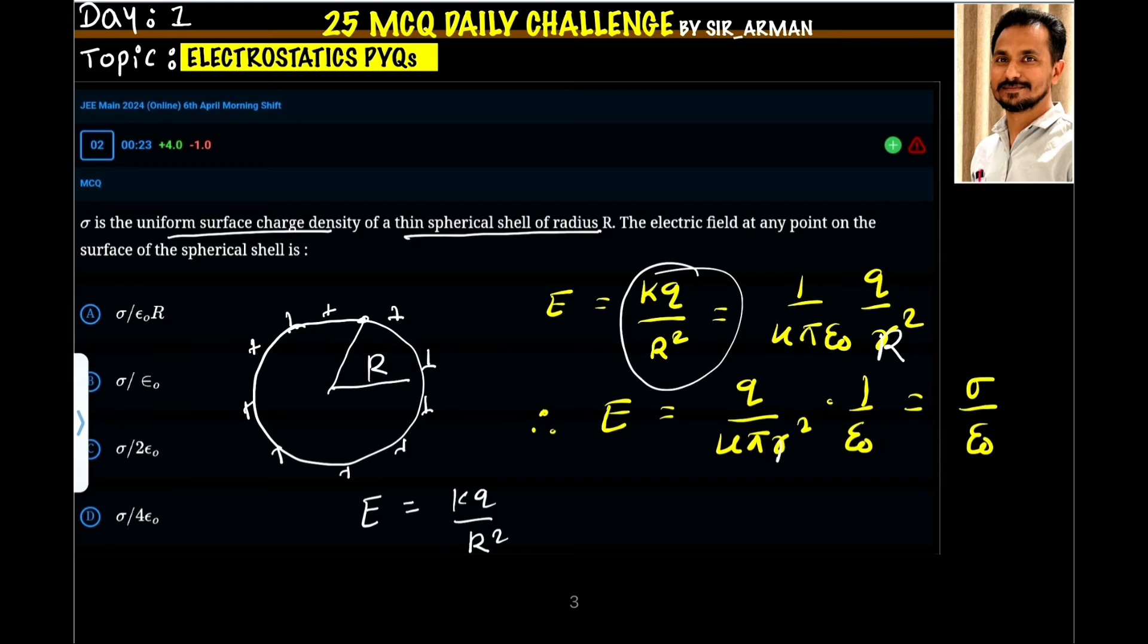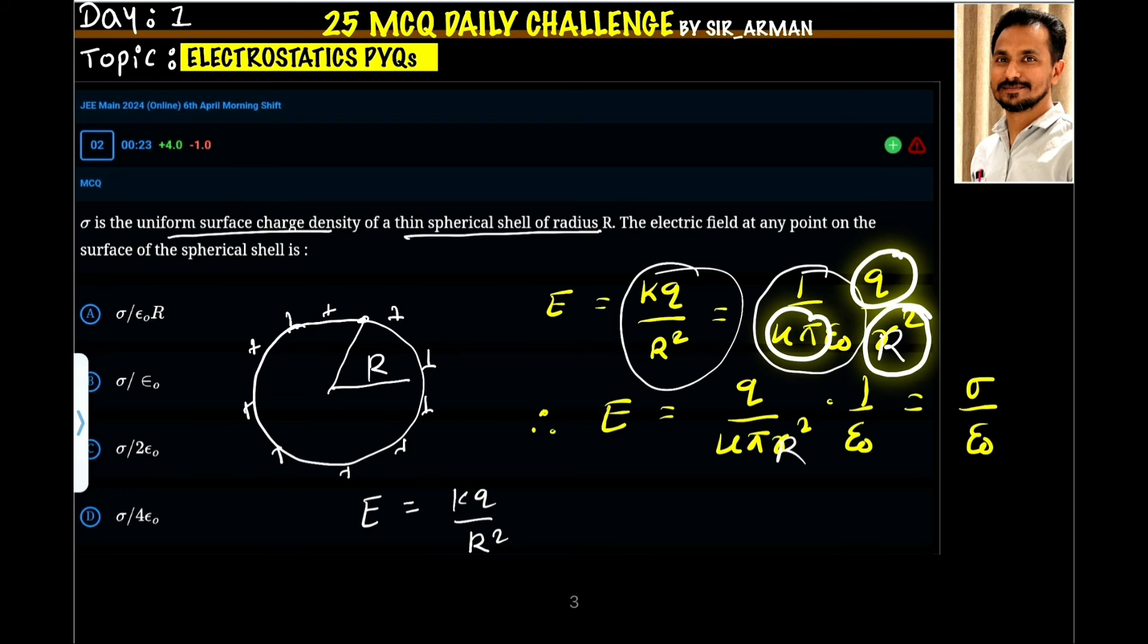So here you can consider capital R, right? Now k can be written as 1 upon 4π epsilon naught. So it is q upon r square, 1 upon 4π epsilon naught q upon r square, now q 4π into r square.